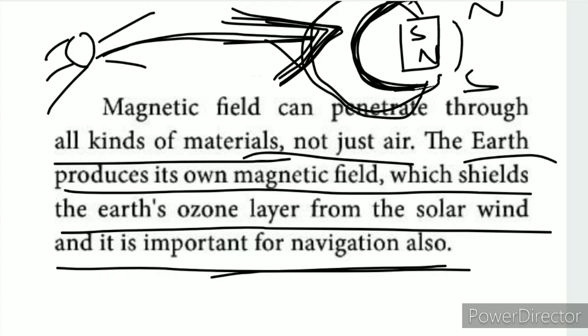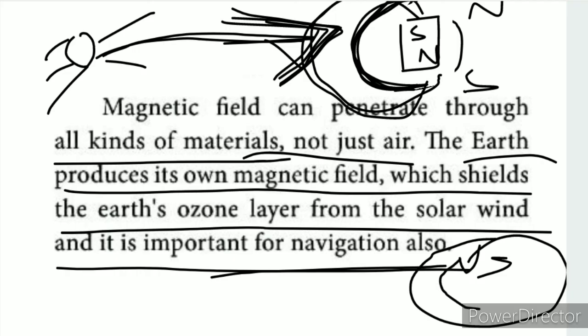Interestingly, birds also use the magnetic field for navigation. Birds in the US and birds in Tamil Nadu are the same species — how do they know where to go? The magnetic field and the beak help birds sense direction. This is an area of ongoing research — how animals can sense the magnetic field.